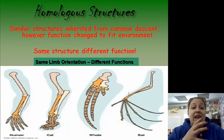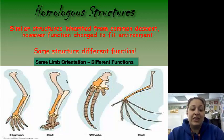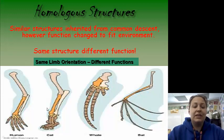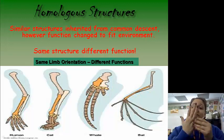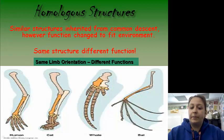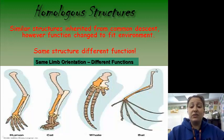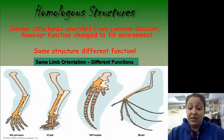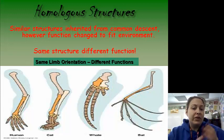Homologous structures are the same or similar structures but may have different functions. Looking at the arm of a human, a cat, a whale, and a bat — humans use it to reach and grab; it starts with one bone, then two, then small bones, then finger-like bones. The cat uses it to walk on, but has the same bone pattern. The whale uses it as a fin — one bone, two bones, small bones, finger-like bones — but very different in function from the human. The bat also has this same structure, but it forms their wing for flying. Homologous structures are the same structure but may have different functions.